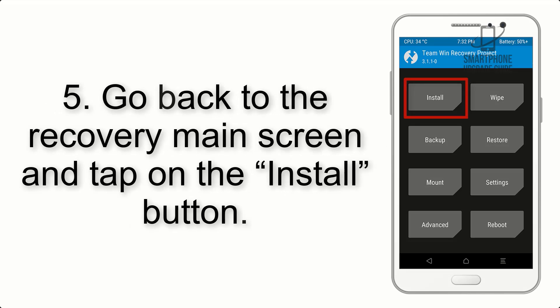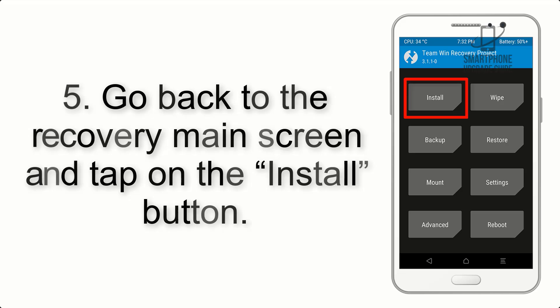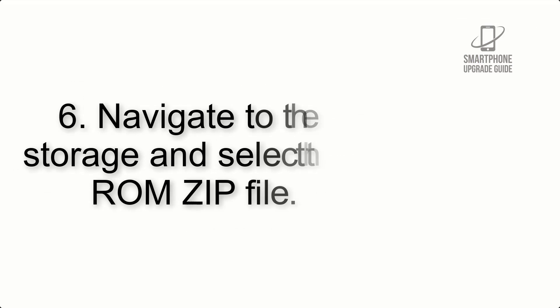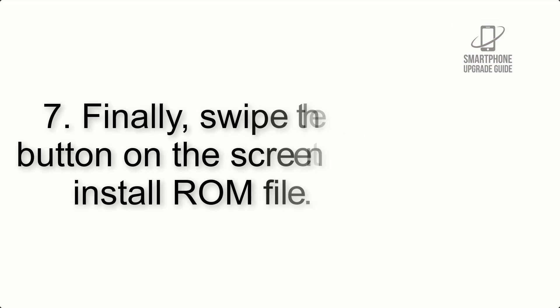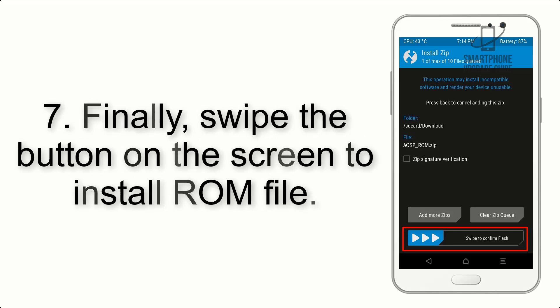Step 4: Swipe the button to wipe the device. Step 5: Go back to the recovery main screen and tap on the Install button. Step 6: Navigate to the storage and select the ROM zip file.